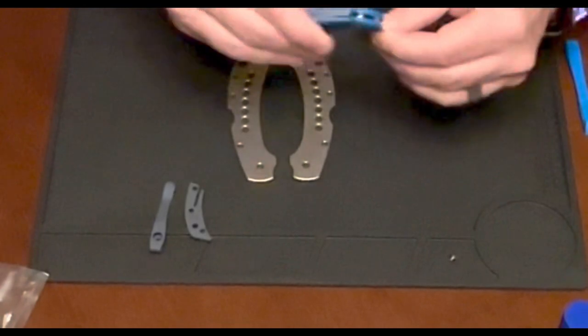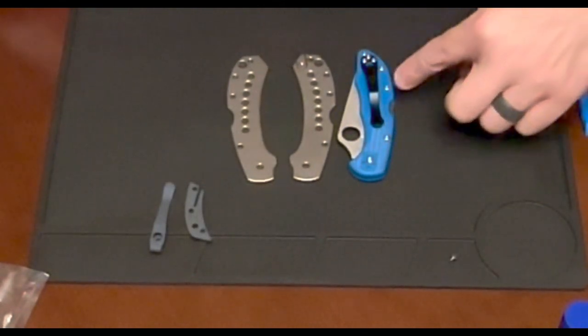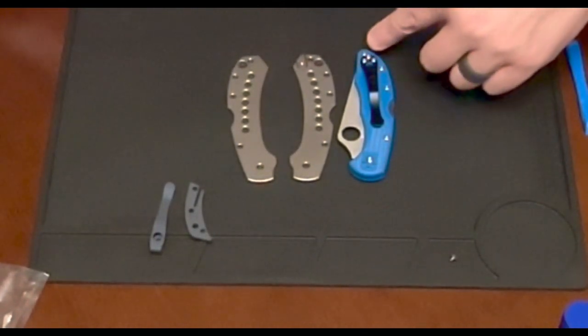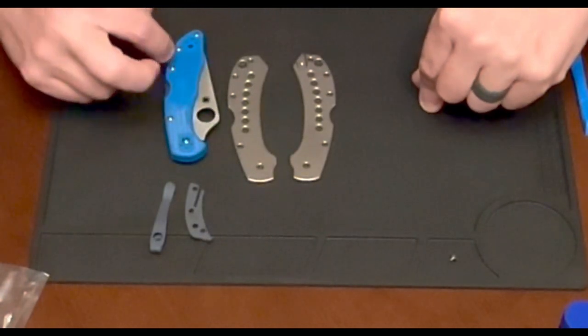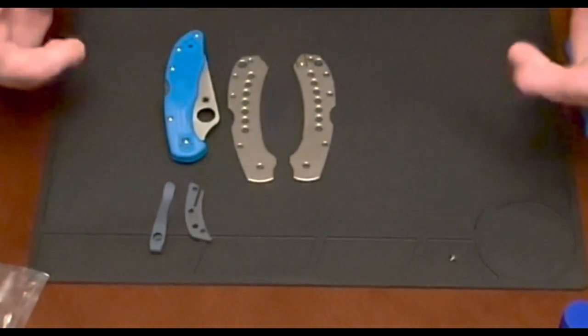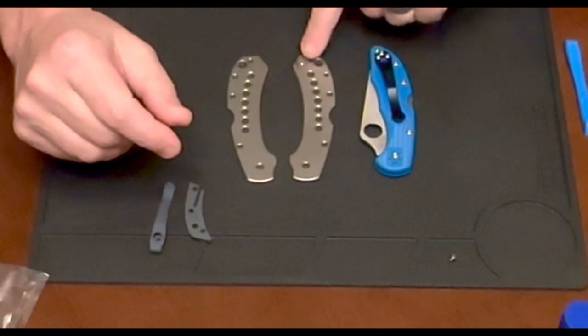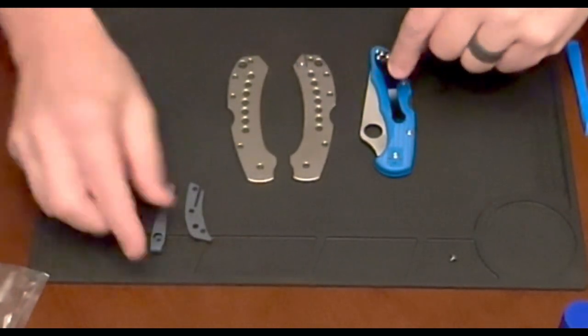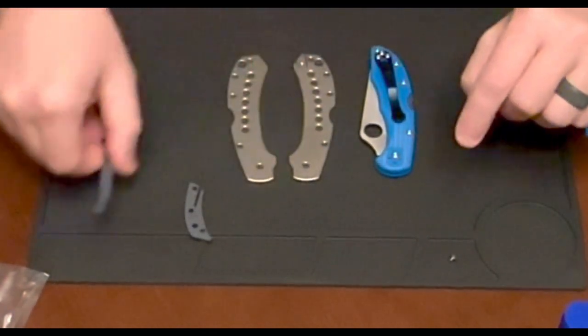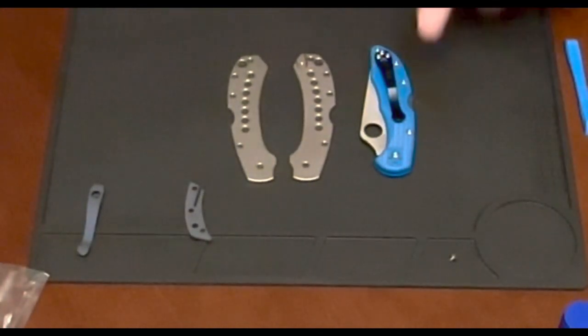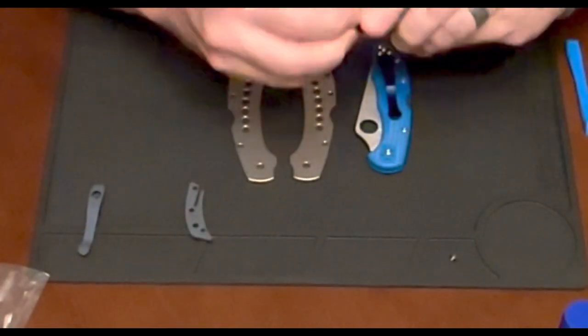Still can't quite figure out why there's an extra screw. Maybe it's for this piece here. For the deep carry pocket clip. That makes sense. Okay. So what I'm going to do is I'm going to take it down, probably do this on high speed so you don't have to sit through it all.